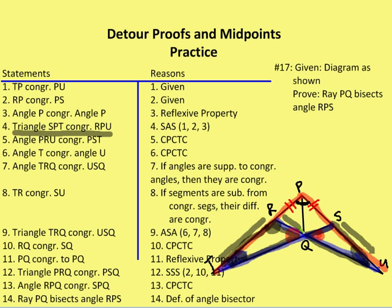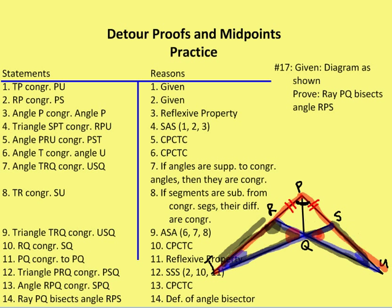Now I can say that RQ is congruent to SQ by CPCTC. Once I have RQ congruent to SQ, I can also say that PQ is congruent to itself by the reflexive property. Now I have two triangles — RPQ and SPQ — congruent by side-side-side. Once I have those congruent by SSS, I can say that angle RPQ is congruent to angle SPQ by CPCTC, and finally that ray PQ bisects angle RPS.